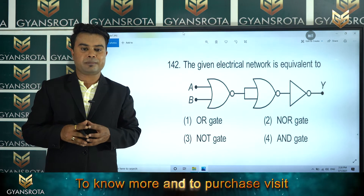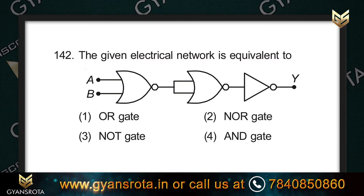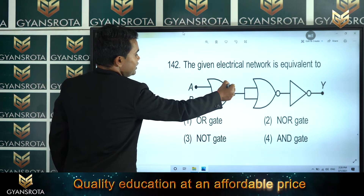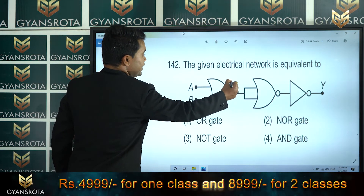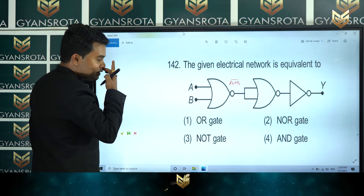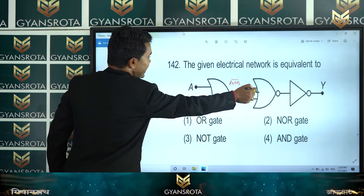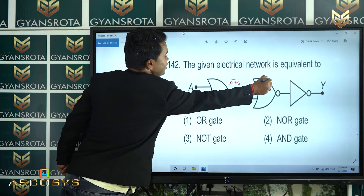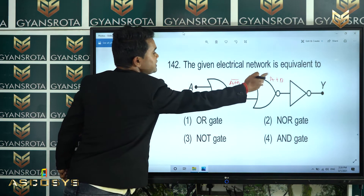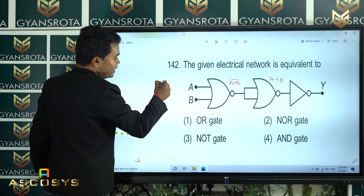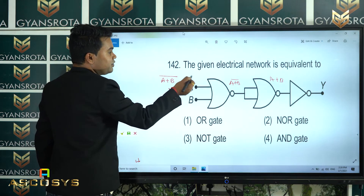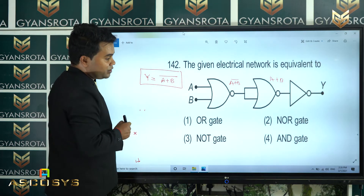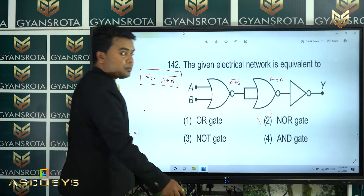Question number 142: The given electrical network is equivalent to which gate? A and B enter a NOR gate, giving output (A+B)̄. This output is fed into another NOR gate along with itself to give A+B. Then A+B enters a final NOR gate giving the output (A+B)̄, which is the NOR gate function. So option number 2, the NOR gate, is the correct answer.